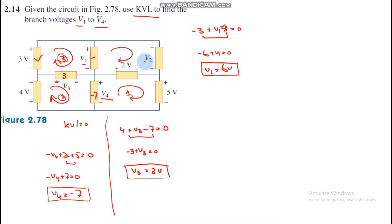In order to find V2, we will use KVL in this loop.